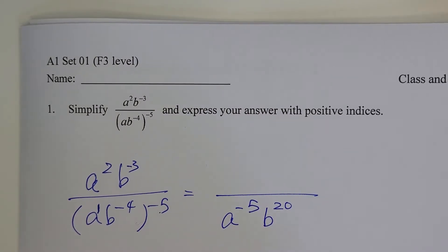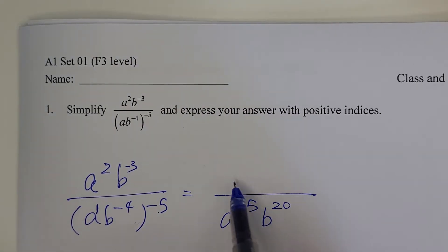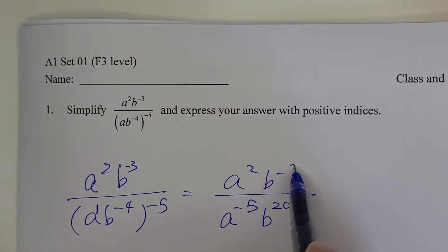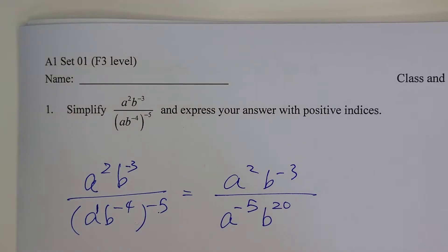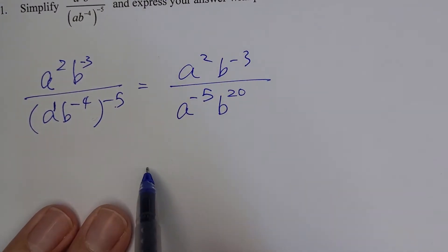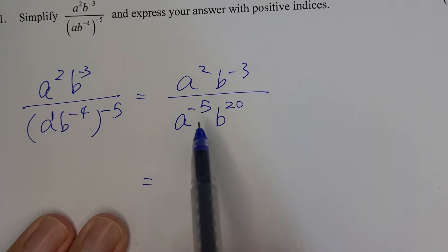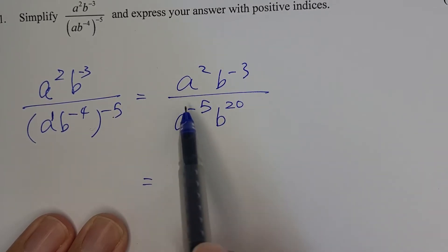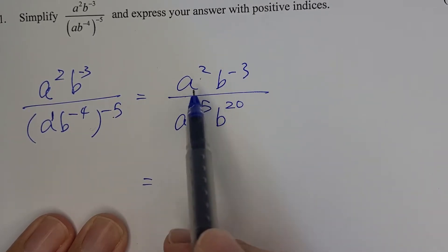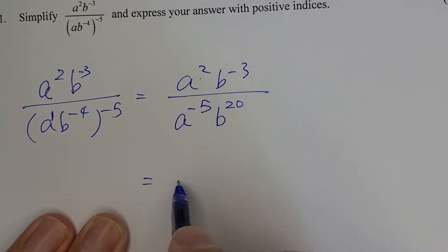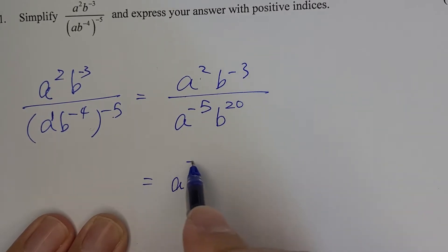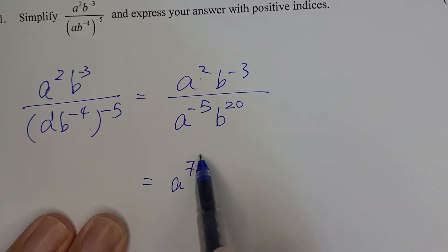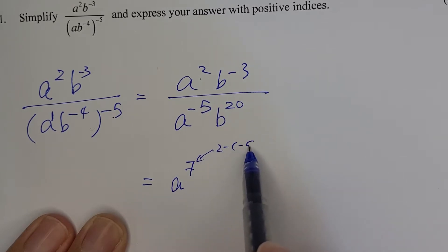Next, a squared b to the power of negative 3, you just keep it. Then you can present your answer by doing the subtraction of the indices of the same base: a squared over a to the power of negative 5, that's a to the power of 7, because that is 2 minus negative 5.